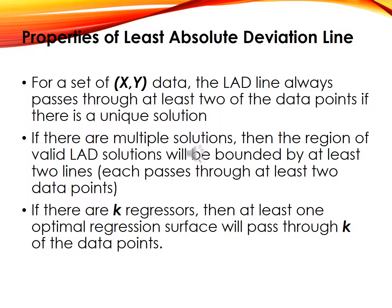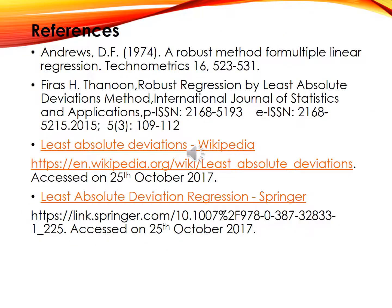Now we can see some properties of the least absolute deviation line. For a simple set of x-y data, the LAD line always passes through at least two of the data points. If there is a unique solution, we can see from the above plot this is true. If there are multiple solutions, the region of valid least absolute deviation solutions will be bounded by at least two lines, each passing through at least two data points. In general, if there are k regression parameters, then at least one optimal regression surface will pass through k of the data points. Thank you so much.